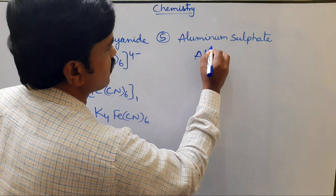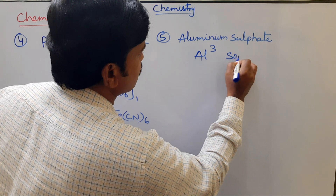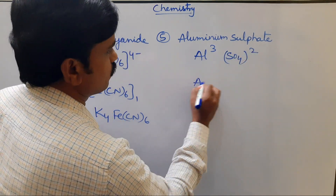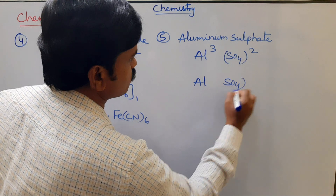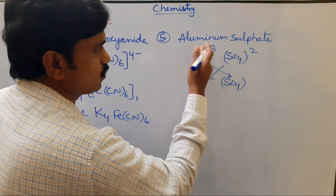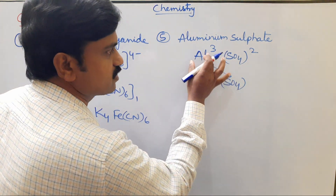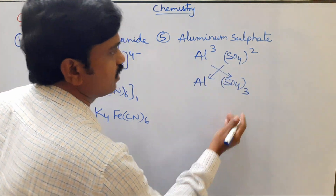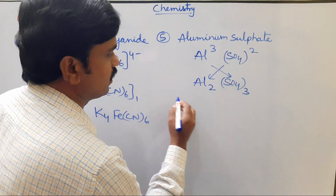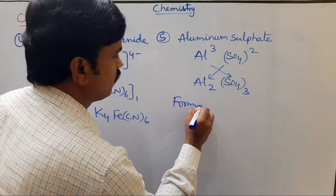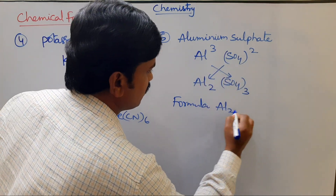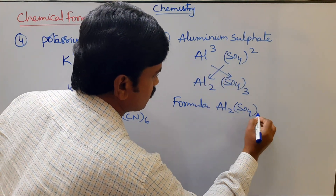Example: aluminium sulfate. Aluminium has charge 3 and sulfate ion SO₄²⁻ has charge 2. Writing Al and SO₄, then criss-crossing these charges, gives aluminium sulfate as Al₂(SO₄)₃.